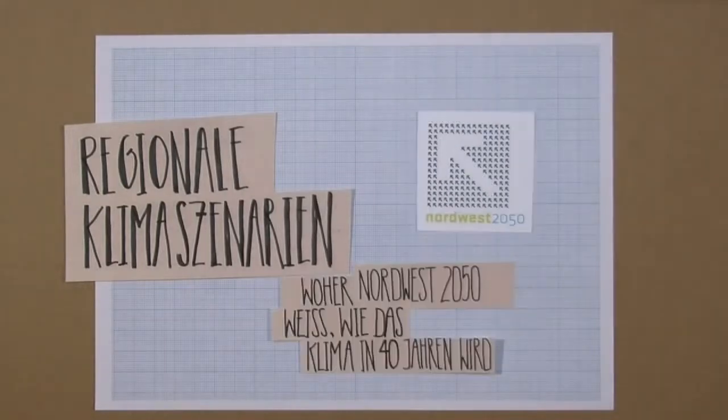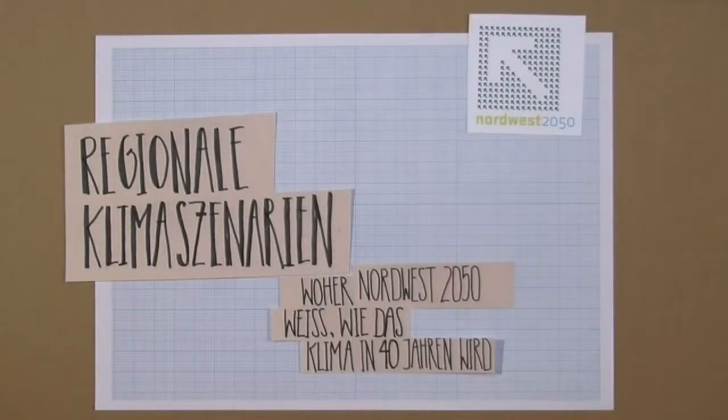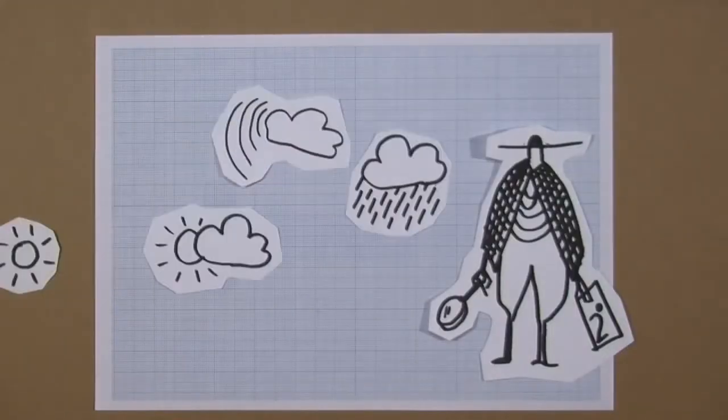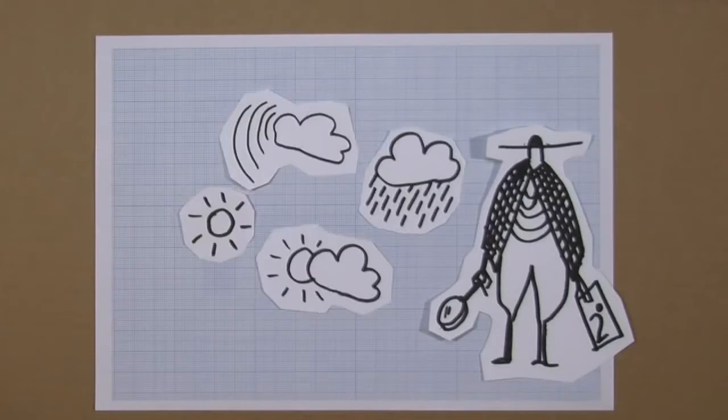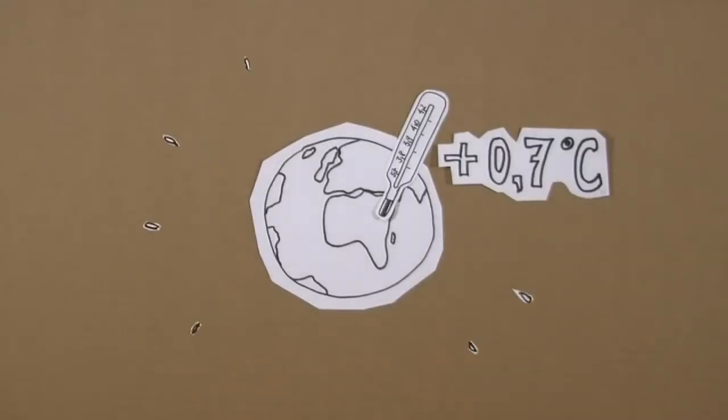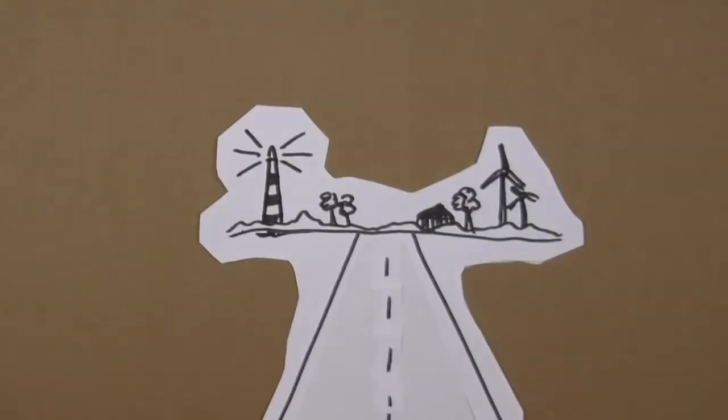Regional climate scenarios: how Northwest 2050 knows what the climate will be in 40 years. For over 100 years now, people have been collecting and documenting weather data on a regular basis worldwide. From these long-term records, we know that today it's warmer as a global average than it was at the beginning of the 20th century.